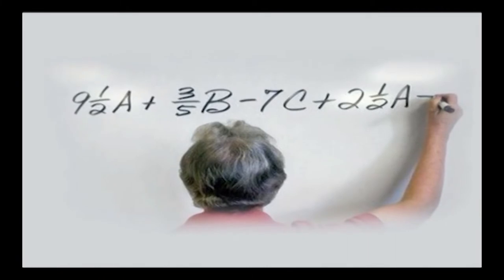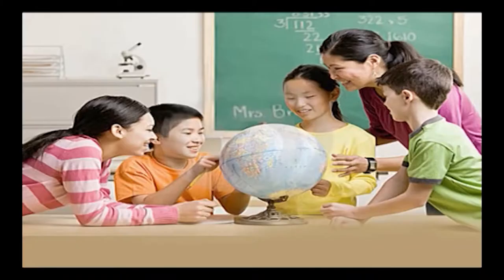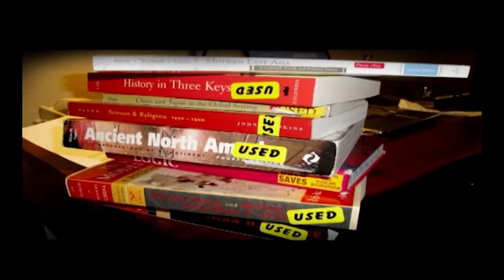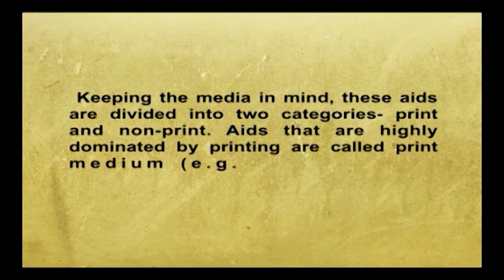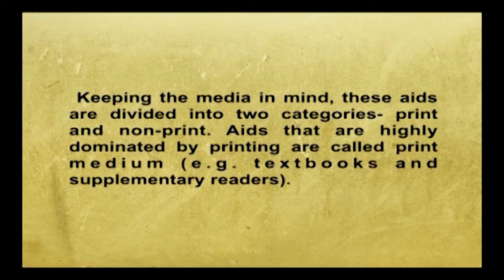An aid that influences the learners' sight is known as a visual aid. This category includes blackboard or whiteboard with chalk or pen, bulletin boards, globe, models, charts, photographs, textbooks, silent motion pictures, etc. The aids that influence both sight and hearing are classified as audiovisual aids. Keeping media in mind, these aids are divided into two categories: print and non-print. Aids dominated by printing are called print media — for example, textbooks and supplementary readers.